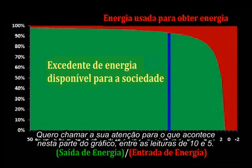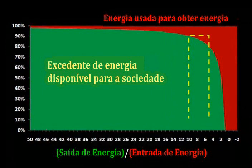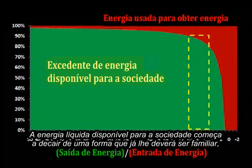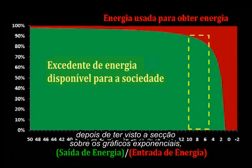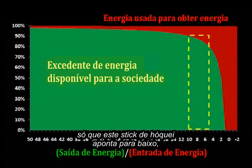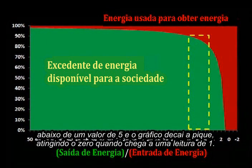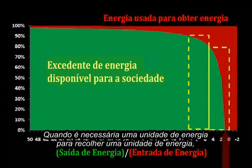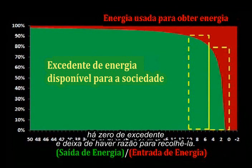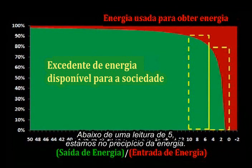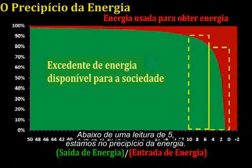Now I want to draw your attention to what happens between the readings of 10 and 5 on this chart. The net energy available to society begins to drop off in a manner that should be familiar after seeing the section on exponential charts — only this hockey stick points down. Below a reading of 5, the chart heads down in earnest, hitting 0 when it gets to a reading of 1. When it takes one unit of energy to get a unit of energy, there is zero surplus, and there's really no point in going through the trouble of getting it. Below a reading of 5, we are on the energy cliff.